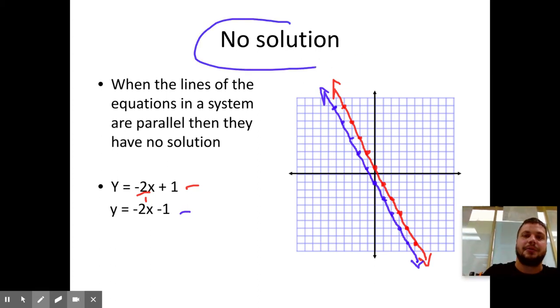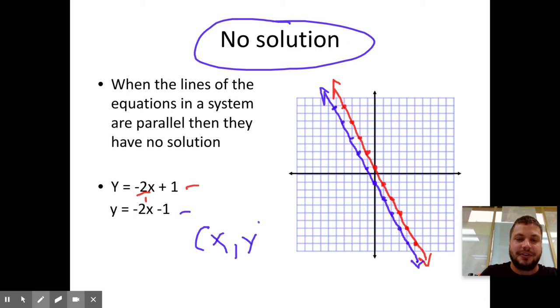They are staying the exact distance away from each other because they have the same slope. And I think you'll remember from our previous unit, two lines that have the same slope are what's called parallel. Parallel lines never cross. This means that I would write that my answer is no solution. There is no point. There is no x comma y in the history of the world that would make both of these equations true.